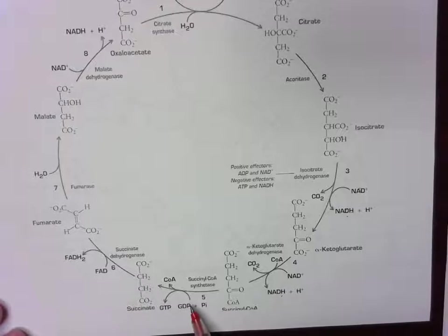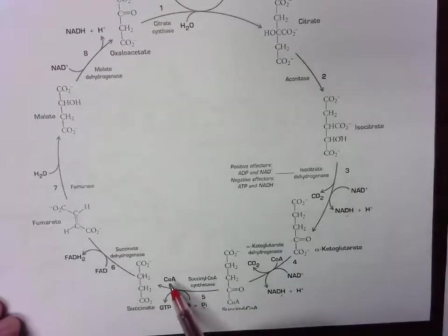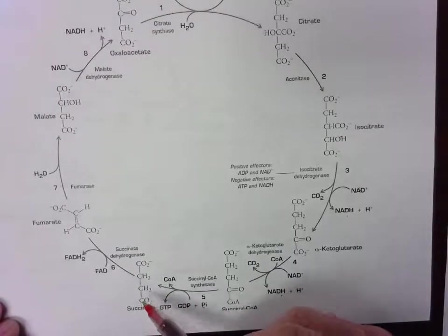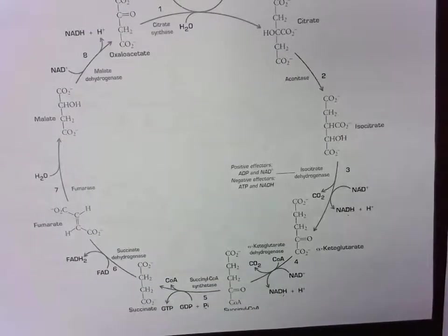And then in step five, GDP and inorganic phosphate and succinyl-CoA are our reactants. GTP and coenzyme A and succinate are our products. So we get two GTPs here. That would be step five. And as we know, two GTPs really is equivalent to two ATPs.